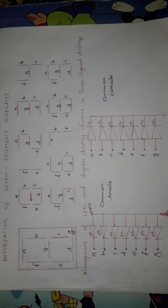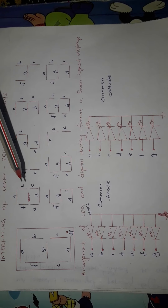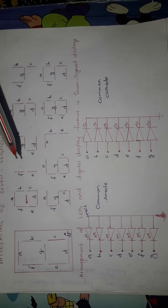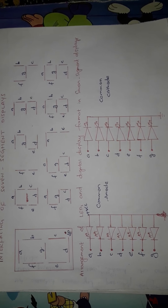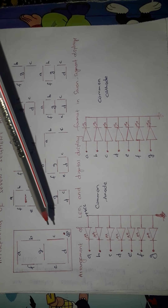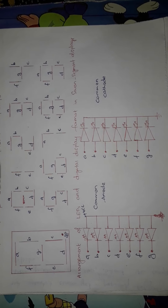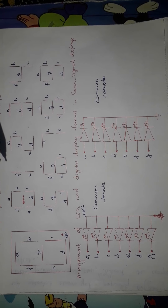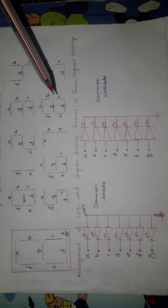To display the number zero, you need to turn on segments A, B, C, D, E, and F, and turn off segment G. To display the number one, you need to turn off segments A, B, C, D, G, and DP, and turn on only the two segments E and F. Turning on only E and F and turning off the rest displays the number one on the seven segment display.